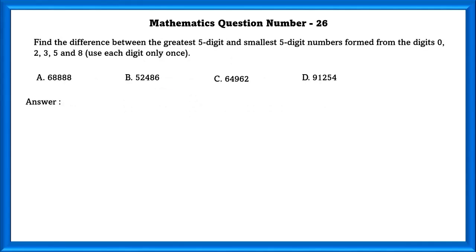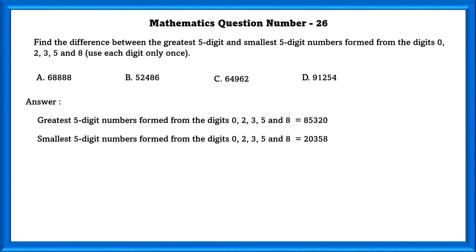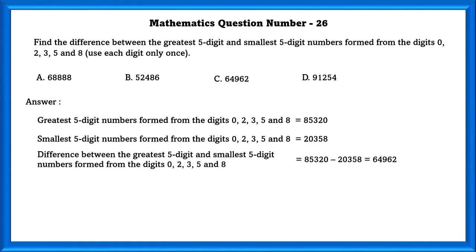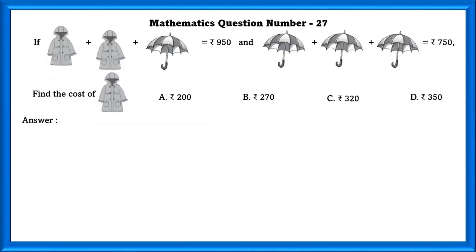Mathematics question number 26. Find the difference between the greatest 5 digit and smallest 5 digit numbers formed from the digits 0, 2, 3, 5 and 8, using each digit only once. The greatest 5 digit number is 85,320 and the smallest 5 digit number is 20,358. And the difference between these two numbers is equal to 64,962.